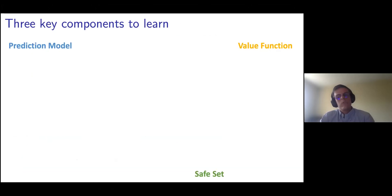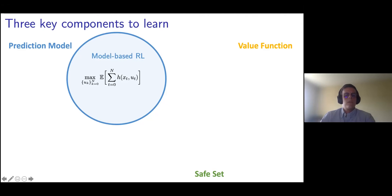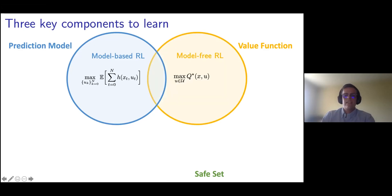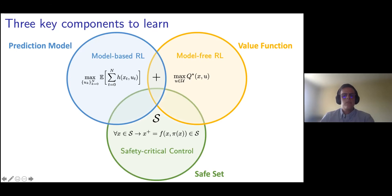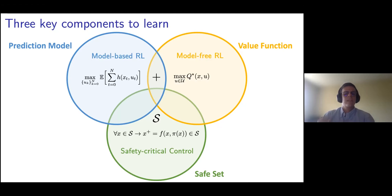These three key components are used both in the learning and control communities. In model-based reinforcement learning, we usually estimate a prediction model and then use an optimization framework to plan a trajectory over a horizon of N steps, apply the first element of our optimized vector, and iterate. In model-free reinforcement learning, we usually estimate from data a value function that maps the current state and action to the closed-loop cost of completing the task. These two strategies can also be merged together. The last key element is a safe set, computed in the safety-critical control community. A safe set S is forward invariant, meaning that if our system belongs to the set, the trajectory will evolve in that set for all time instances. If we can compute a safe set that doesn't intersect with the unsafe region of the state space, we can guarantee safety.